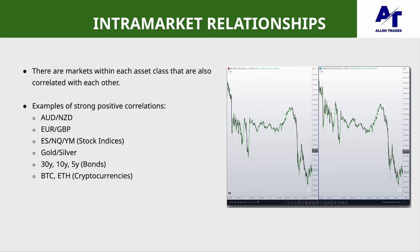For example, AUD and NZD tend to trade in the same direction. Euro and British pound tend to trade in the same direction. ES, NQ, and YM — the S&P 500, NASDAQ 100, and the Dow Jones — they tend to trade in the same direction. Then we have gold and silver, and the 30-year, 10-year, and 5-year treasury bonds — all of those tend to trade in concert with each other. And for you crypto fans, Bitcoin and Ethereum also tend to trade in the same direction as each other.